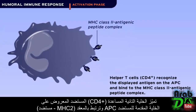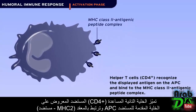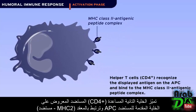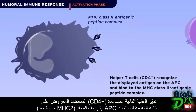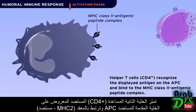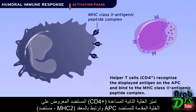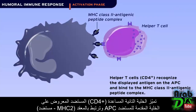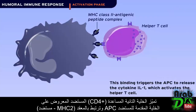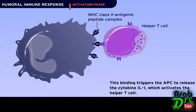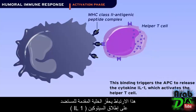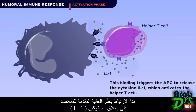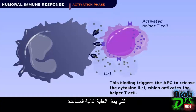Helper T cells, CD4+, recognize the displayed antigen on the APC and bind to the MHC class 2 antigenic peptide complex. This binding triggers the APC to release the cytokine IL-1, which activates the helper T cell.